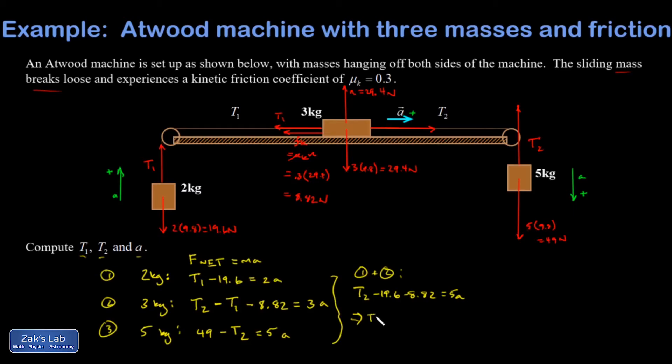And that's T2 minus 28.42. It doesn't hurt to keep a little extra precision in the middle of the calculation. It equals 5a. Suppose I call that equation four and I'm going to take that and add it to equation three. And when I do that the T2's eliminate and I end up with 49 minus 28.42 equals 5a plus 5a that's 10a. And if I solve for a out of that I've got my first unknown.